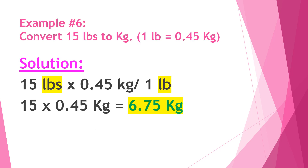Example number six: Convert 15 pounds to kilograms. 1 pound is equal to 0.45 kilograms. Solution: 15 pounds times 0.45 kilograms over 1 pound — cancel pounds, so we have 15 times 0.45, which is equal to 6.75 kilograms.